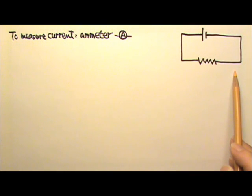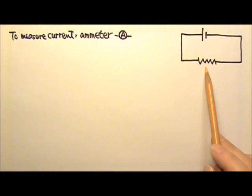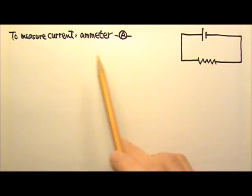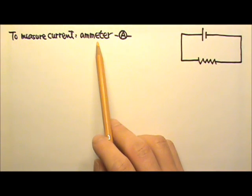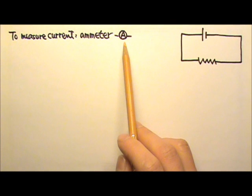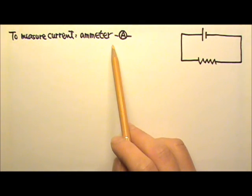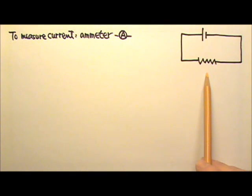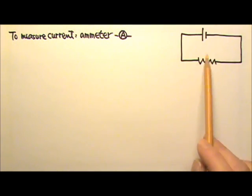In a circuit, if we need to measure the current in, say, a resistor, we can use a meter called an ammeter. We draw a circle around the capital A to represent an ammeter. How do you think we should connect this meter to the circuit in order to measure the current in this resistor?